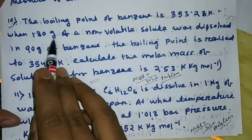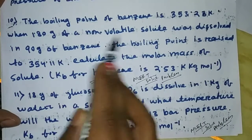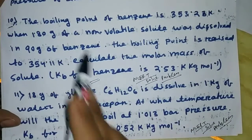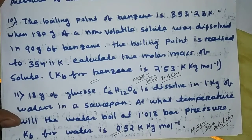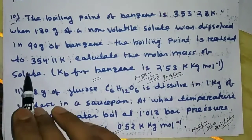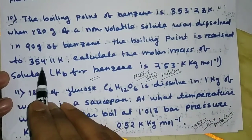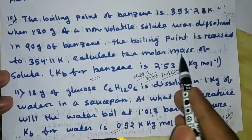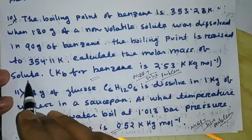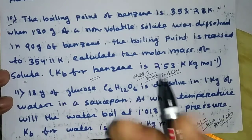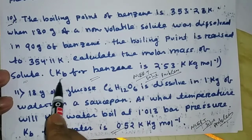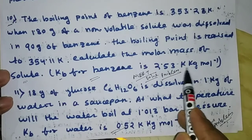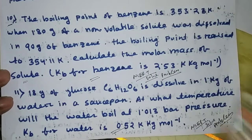When 1.80 grams of a non-volatile solute was dissolved in 90 grams of benzene, the boiling point is raised to 354.11 Kelvin. Calculate the molar mass of the solute. K_B for benzene is 2.53 Kelvin·kg·mol⁻¹.